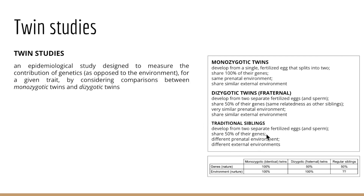However, in contrast to traditional siblings, dizygotic twins share a very similar prenatal environment as well as a very similar external environment growing up. Traditional siblings also develop from two separate fertilized eggs, sharing 50% of their genes, but because they are carried at different times, they share different prenatal environments and different postnatal external environments — different teachers, different friend groups, different activities — even though they mainly live in the same household.